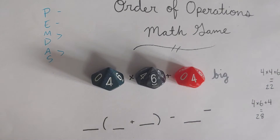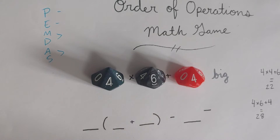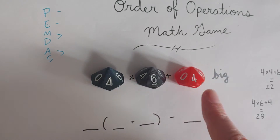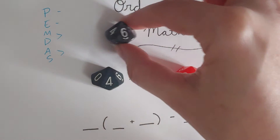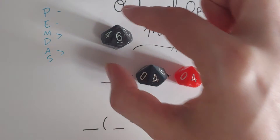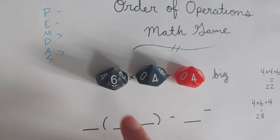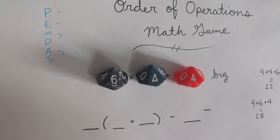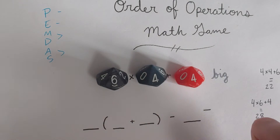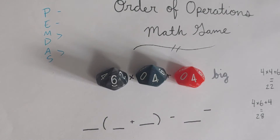If I'm working on my own, I would just ask myself: is that as big as I can get? In this case I can tell it is, because there are two fours, and if I switched the six and the four, six times four is still the same as four times six because of the commutative property of multiplication — so we know we're good.